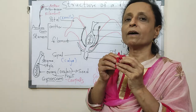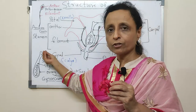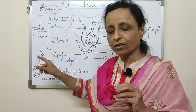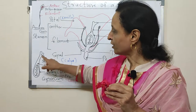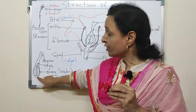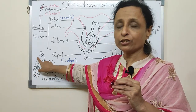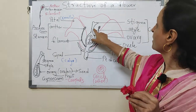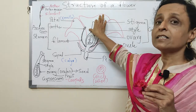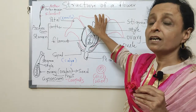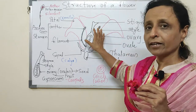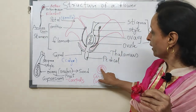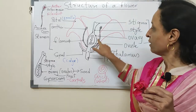The stigma has a nectar-like substance on the top. As it goes down, it has a slender stalk-like structure which ends into the ovary. Here you can see the ovary, the style, and the stigma. Stigma, style, ovary — this is the gynoecium, the female reproductive structure. The innermost whorl is the gynoecium.